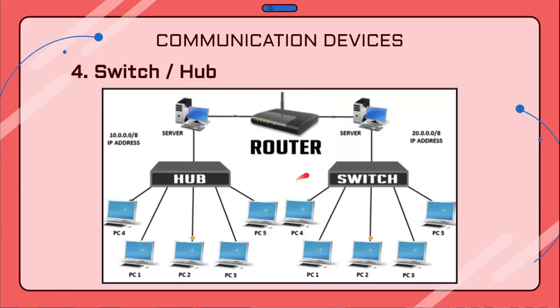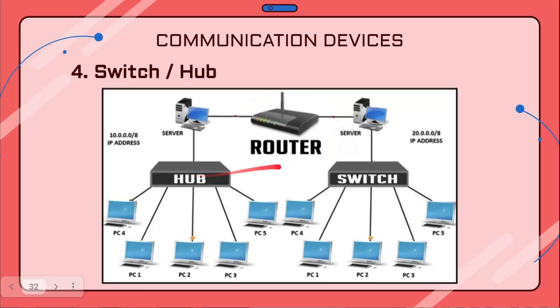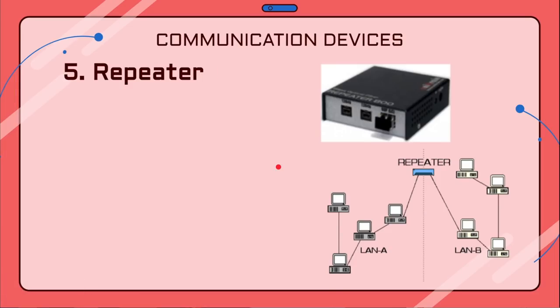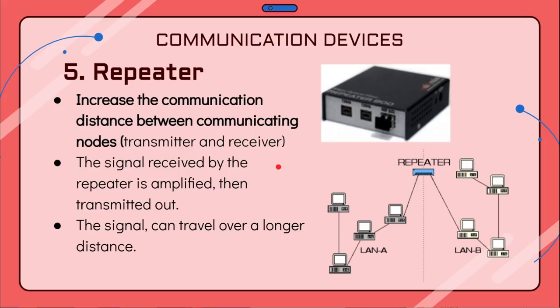In some cases, a hub and switch include a router in their network. Why? They need a router when receiving data from many directions and also wanting to forward the data to one or more destinations.